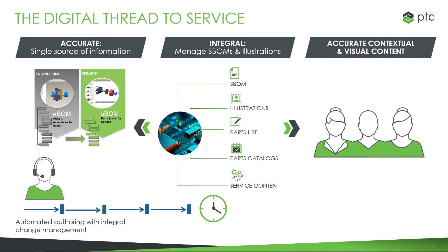Going back to the idea of the digital thread, as we whittle this down for a service information use case, the goal is that we want accurate information — a single source of content that will link out as we need. We want this to be integral with our other business systems, meaning that if we service our parts against a bill of material, we want to be able to link to and manage that bill of material as we're creating our service content. And ultimately, we need this to be accurate in both contextual forms and visually if we're creating illustrations for our end users to reference. All of this needs to happen within the product development cycle — that is the goal of our solution.